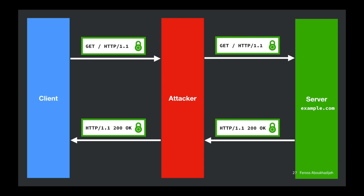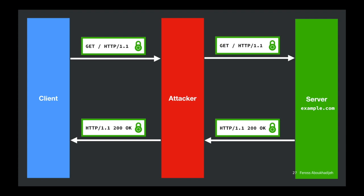The attacker still learns the IP address of the server you're connected to, since TLS operates on top of IP and all packets have destination addresses. It also learns the size of messages and the timing between them — those are potential side channels, but they're outside the scope of what we're trying to solve here.